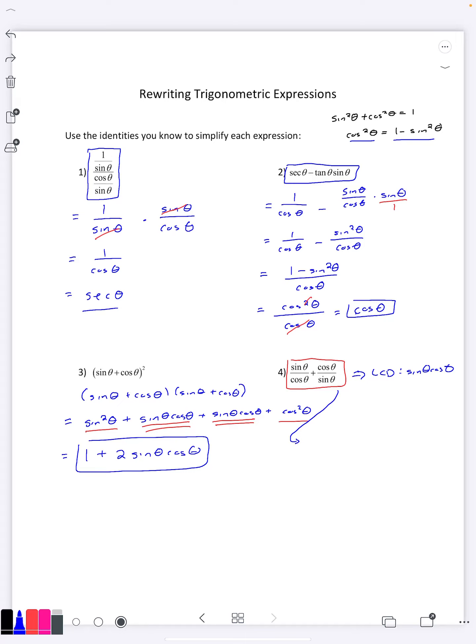If we want to convert each fraction to have that, the first fraction to get sine theta cosine theta on the bottom, you multiply on top by sine theta which is going to give you sine squared theta.